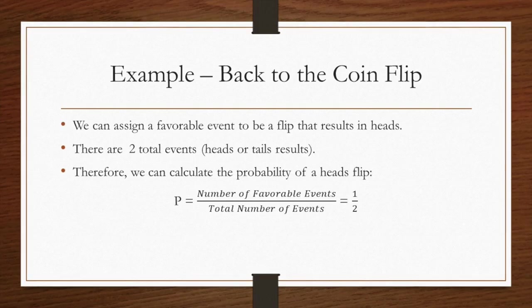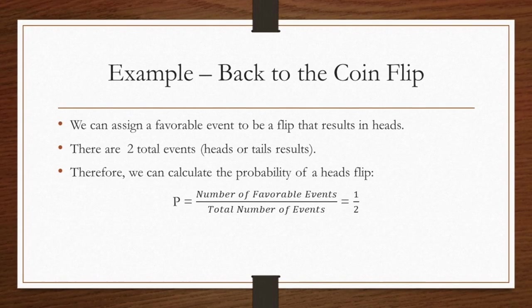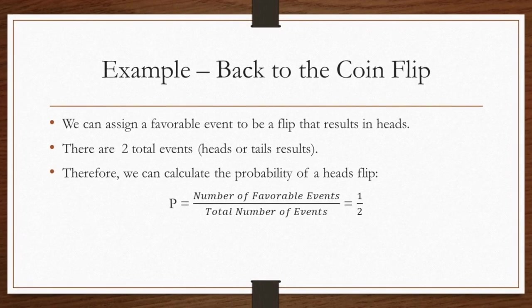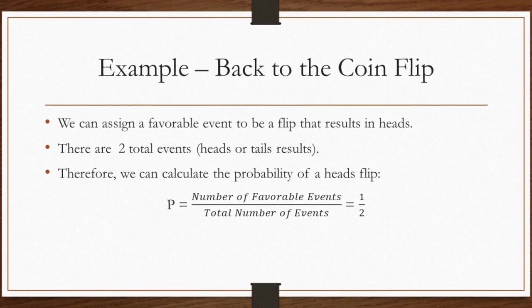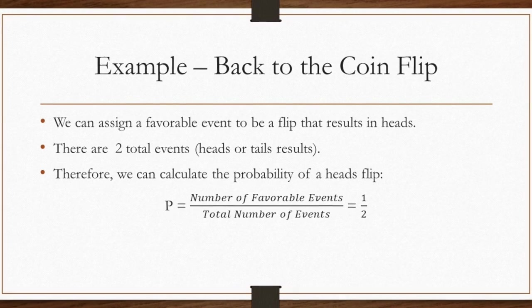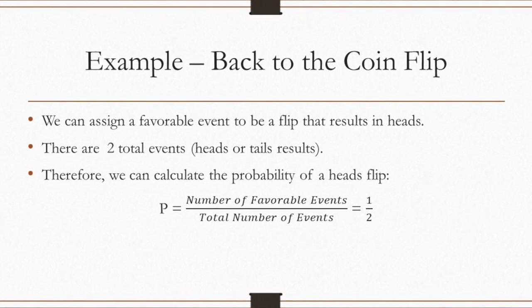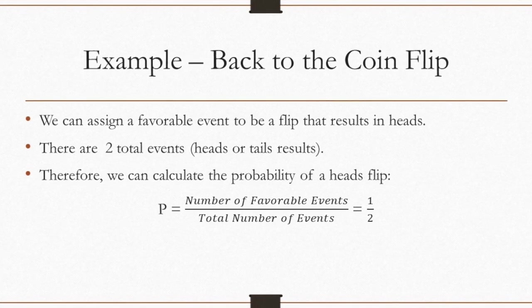Going back to the case of the coin flip, we can assign a favorable event to be a flip that results in heads. We have two total events, flip that results in heads, plus flip that results in tails. Assuming a fair coin, we can then determine the probability of our favorable event occurring to be one half.